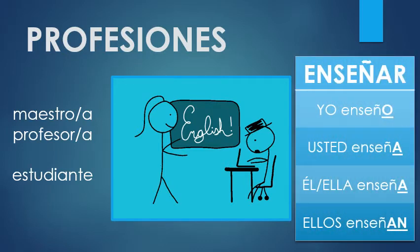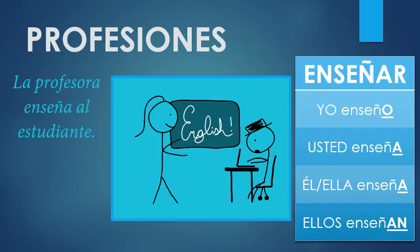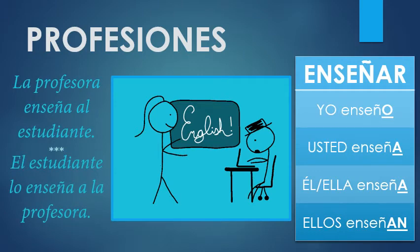I also taught you the verb enseñar, which can mean to teach. So we have the sentence, la profesora enseña al estudiante. Remember, la profesora is she, ella. And so you need to use the third person singular version of the verb enseñar. So enseña just ends in an A. I did briefly mention that enseñar can also mean to show. So it means to teach and also to show, like to demonstrate.